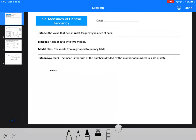This video goes with the skeleton note for 1-2 measures of central tendency. The first thing we're going to do is look at some terminology. The first one is mode, which is the value that occurs most frequently in a set of data.